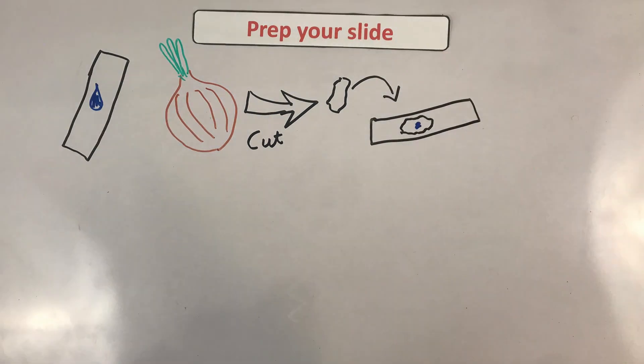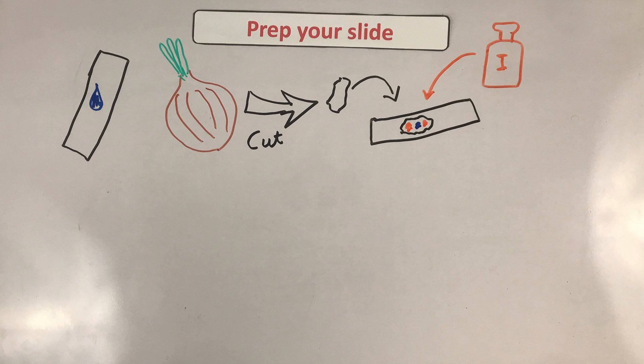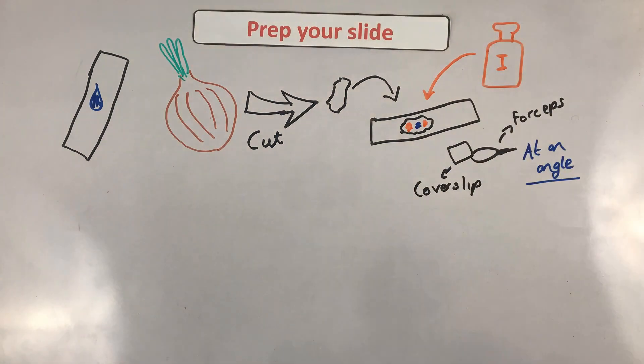Number five, make sure that your onion layer is flat on your slide. Number six, you add a drop of your stain. If you add too much, just soak it up with some paper towels. Soak up the excess with your paper towels. And number seven, the important one, you lower your cover slip using forceps, doing that prevents bubbles forming in your sample.